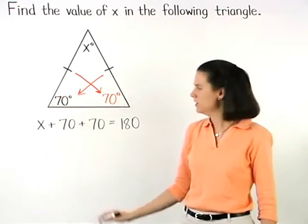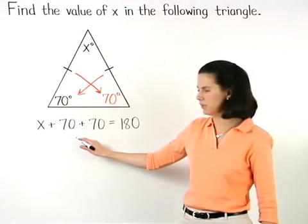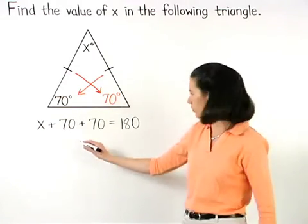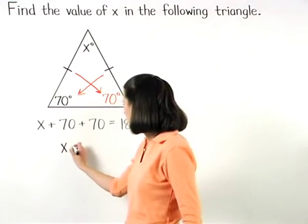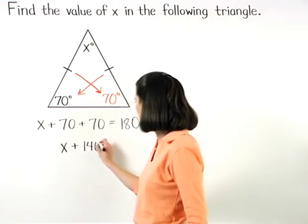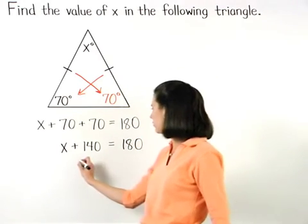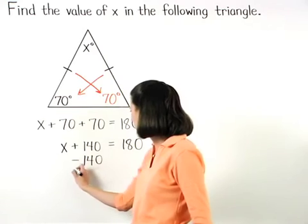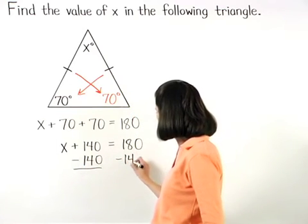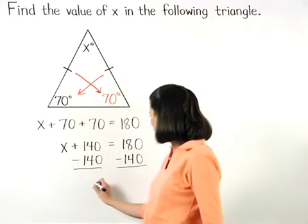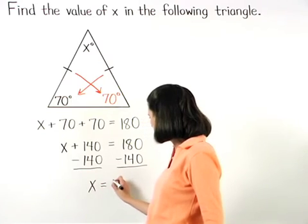Simplifying on the left side, 70 plus 70 is 140. So we have x plus 140 equals 180. And subtracting 140 from both sides, we find that x equals 40.